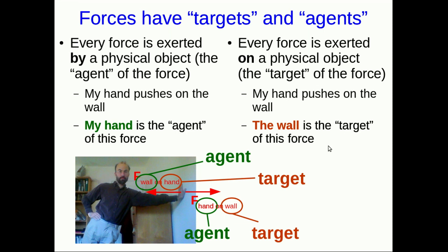I'm going to make a really big deal of this, especially thinking about agents. A lot of students have trouble identifying what forces ought to act on an object, and they'll often invent forces that don't exist. But if they focus on agents — on what objects can exert forces on the thing they're trying to think about — they can usually avoid most of those problems.